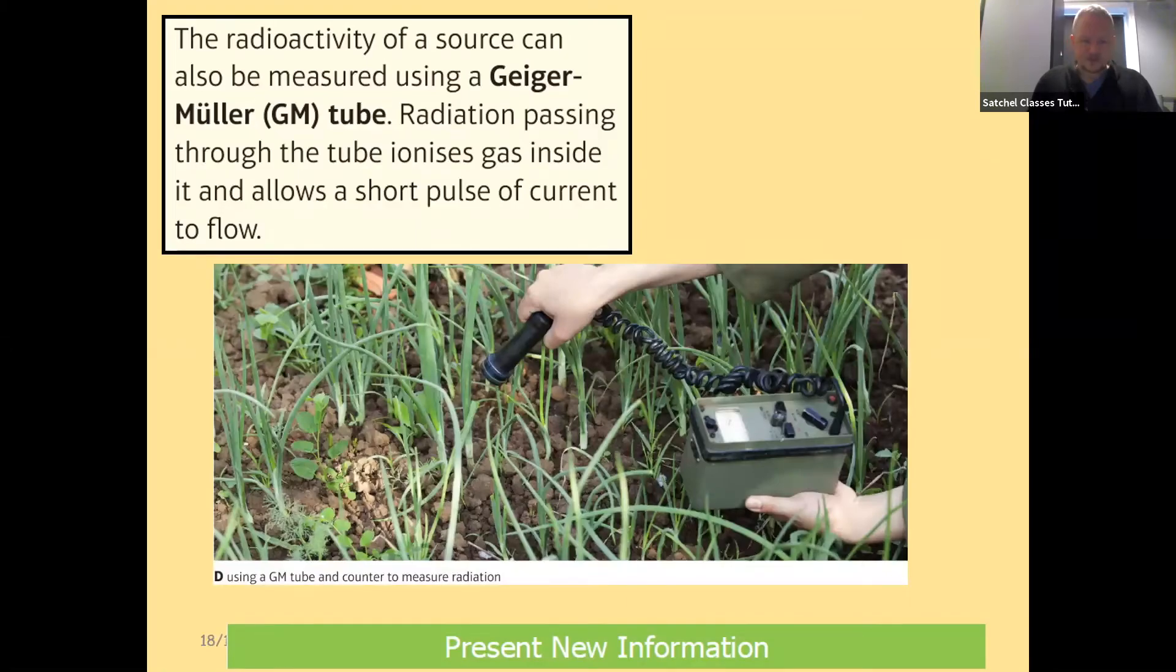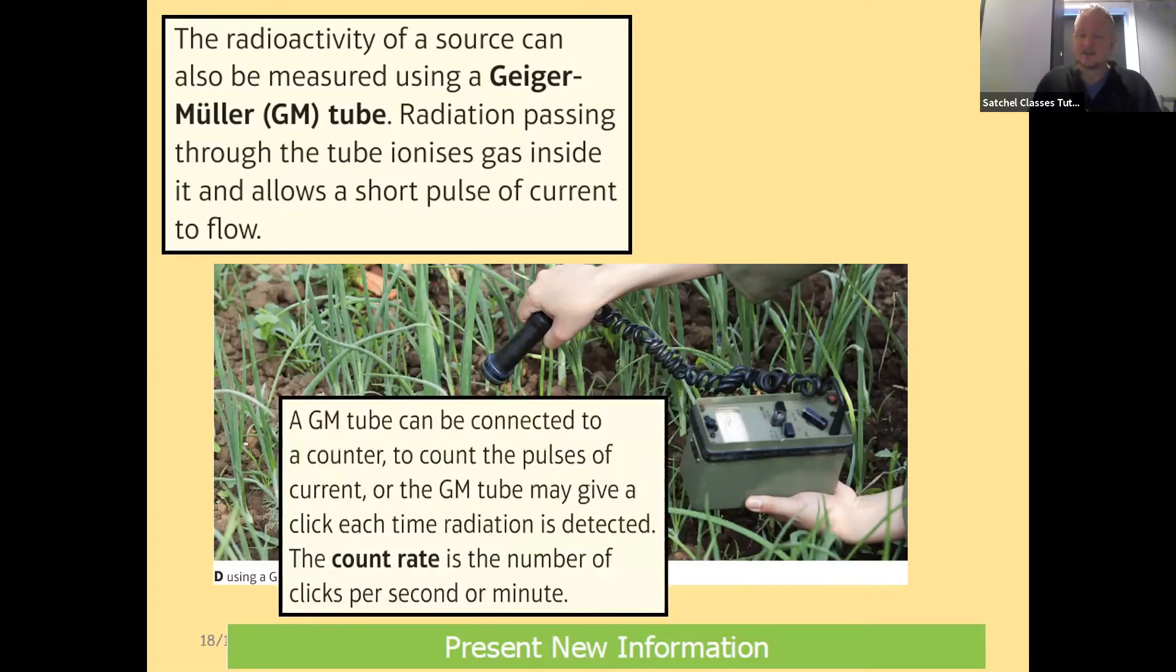When we use the GM tube, it looks like this. There's our GM tube and counter. A Geiger-Müller tube can be connected to a counter. This counts the pulses of current, or the Geiger-Müller tube may give a click each time radiation is detected.